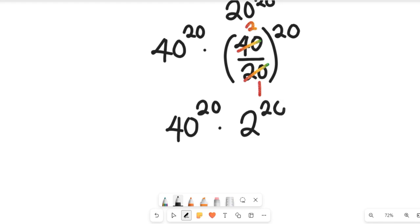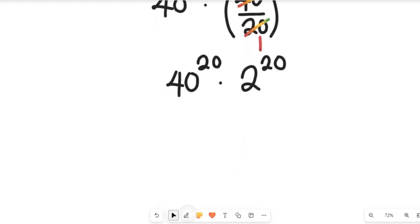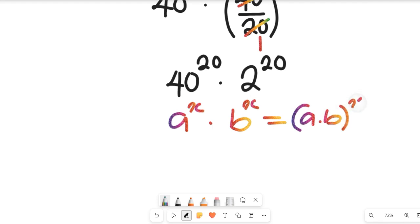Great! Now having seen this, we have also arrived at something: we have an expression such that they have same powers for different bases. Now recall this: if you have a to the power of x multiplied by b to the power of x, that expression can be a multiplied by b all to the power of x.